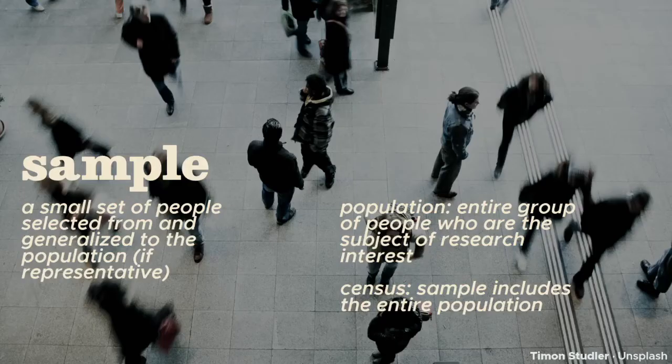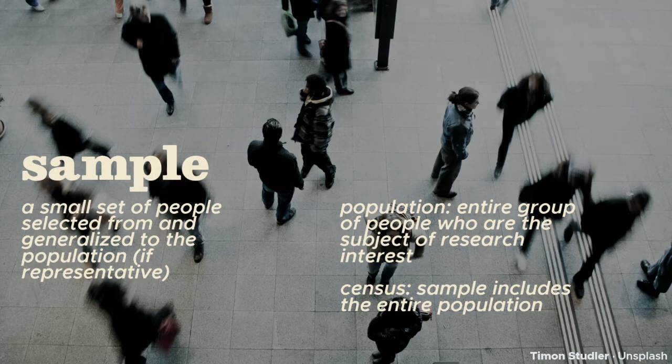A sample is a smaller group of people drawn from the population — that is, everyone who could possibly be included given your research problem. So if you're doing a study on the hand-eye coordination of avid video game players, your population is everyone who plays video games. You might specify a video game or a range of ranks on the leaderboard, but that's still too many people. So you select a sample, a smaller set of people, from the population. We'll see the many ways you can sample from the larger population.